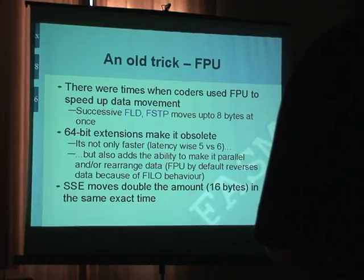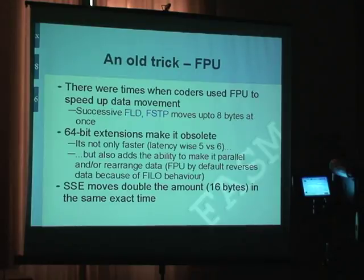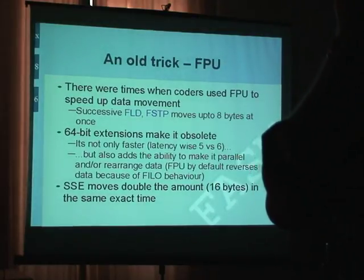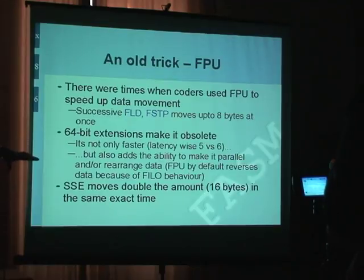I hope many of you remember the FPU was used to move data some time ago. They used successive load and store operations to move eight bytes at once. With 32-bit architecture, you'd take only four bytes at a time, and if you start to unroll the loop, you run out of registers pretty fast — you have only eight of them but you can use about six at maximum. You have plenty of floating point registers; they still remain eight even on 64-bit architecture. But there's another problem with 64-bit architecture: you don't need those loads and stores anymore because 64-bit extensions already have the same amount of bytes you can move.